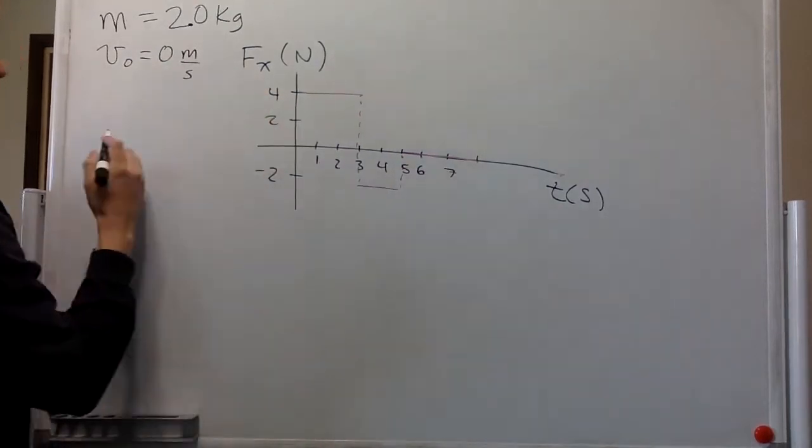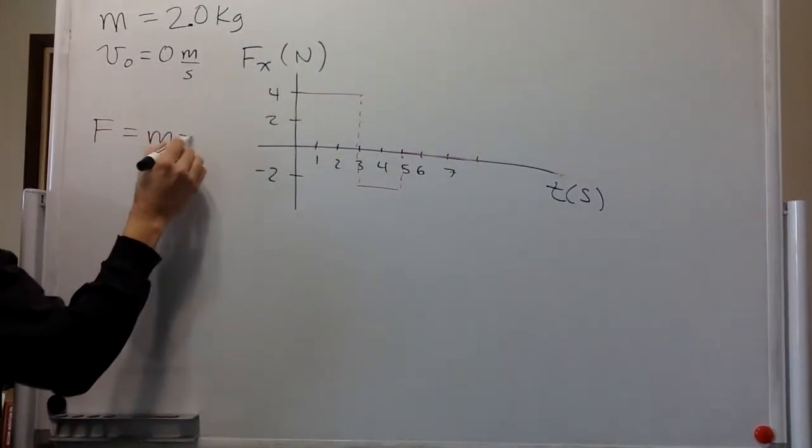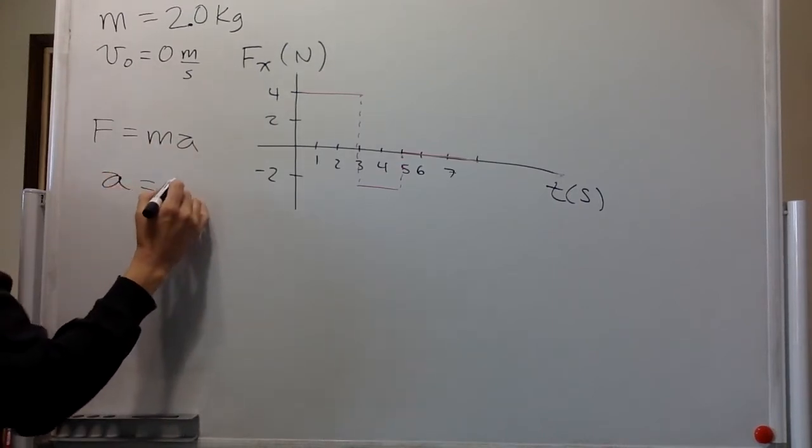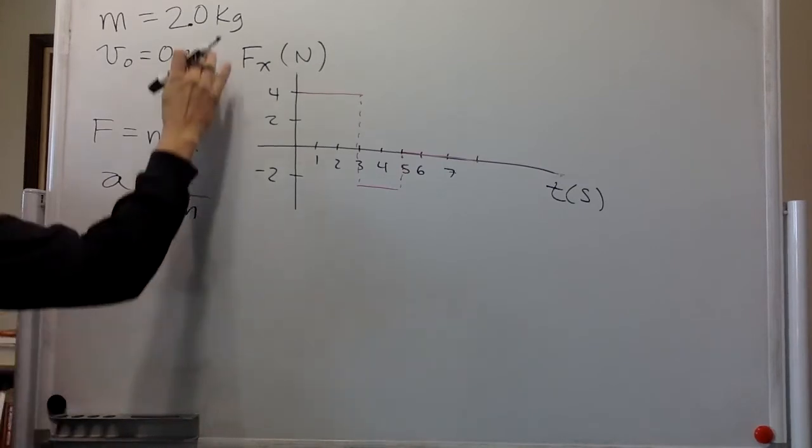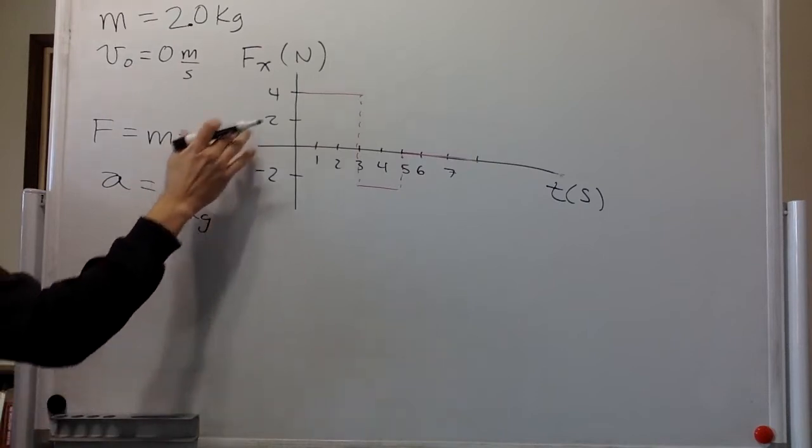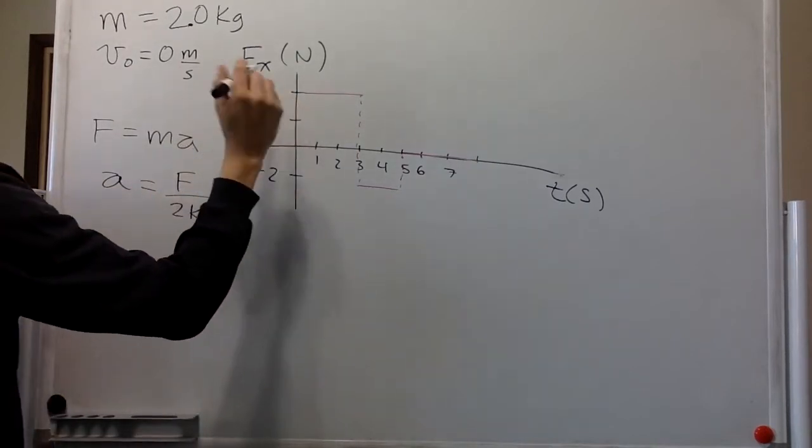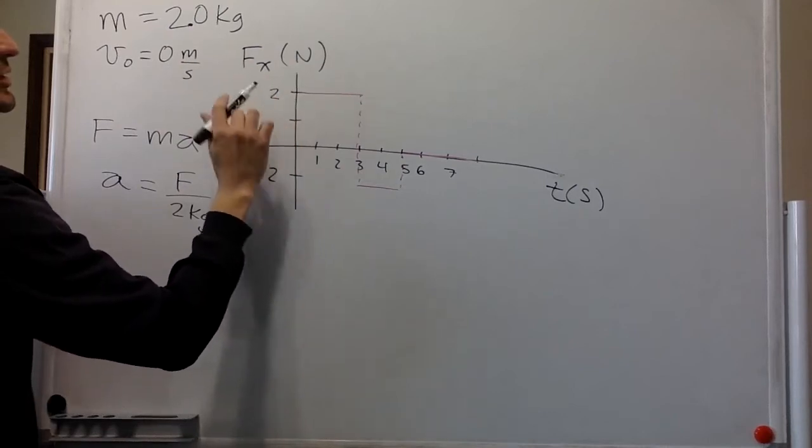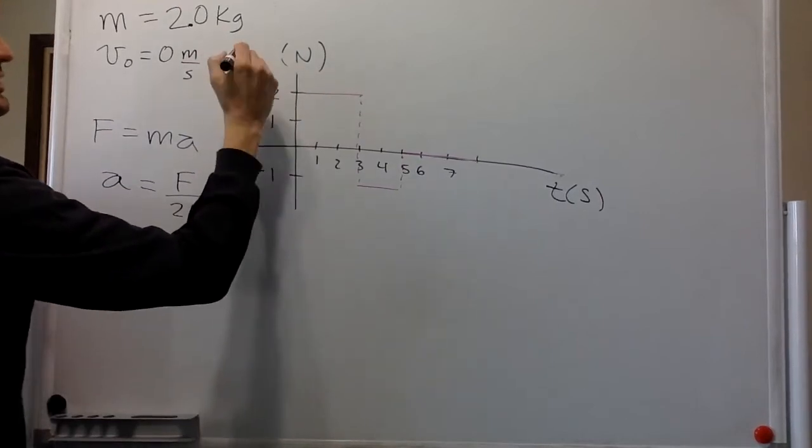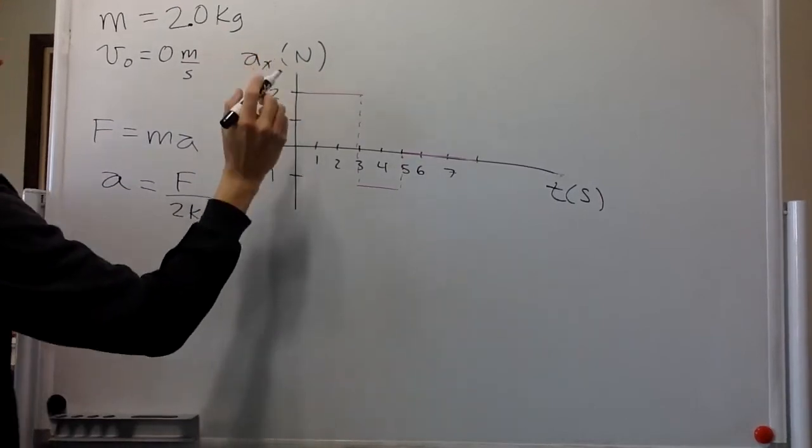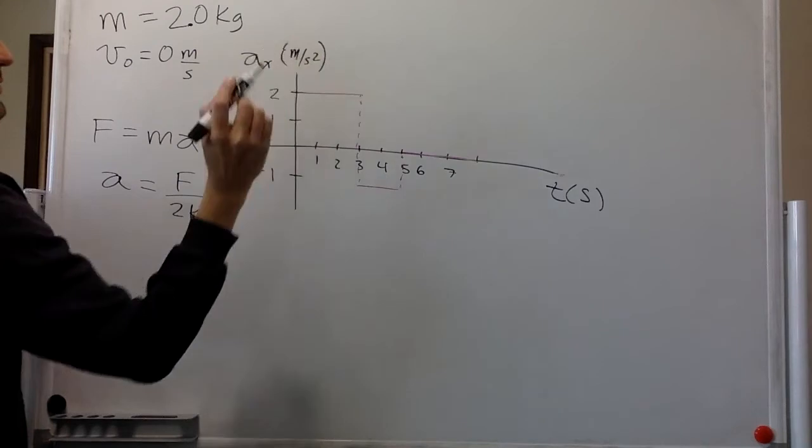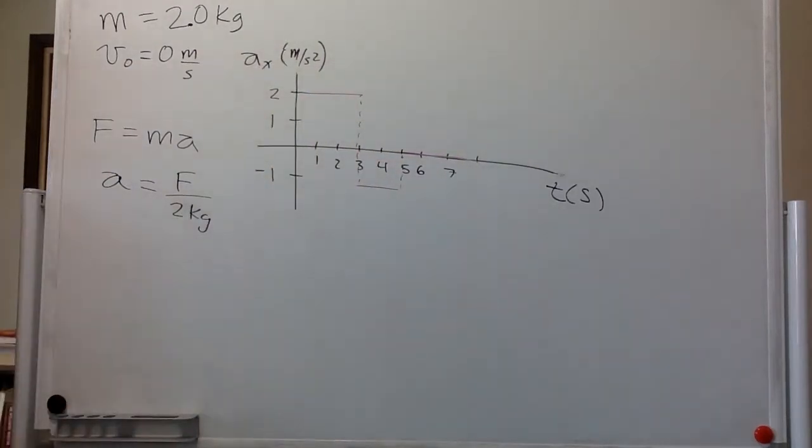Well, remember that force equals mass times acceleration. So the acceleration is force divided by the mass. The mass is 2 kilograms, so we can divide by 2. This will be 2, this will be 1, this will be minus 1. And now this becomes acceleration in x, and the units will be meters per second squared.